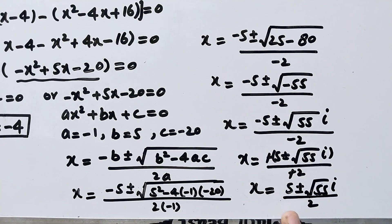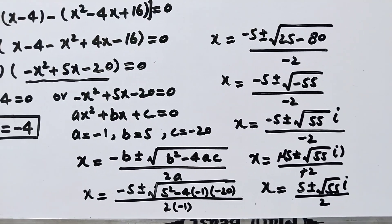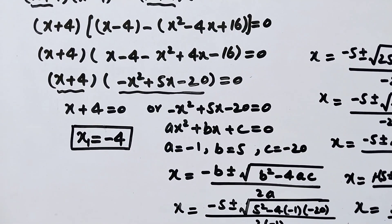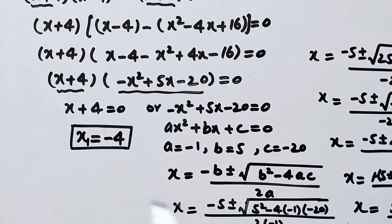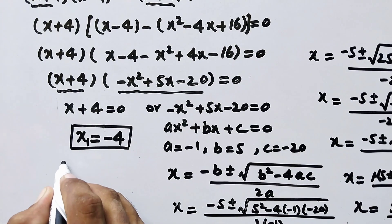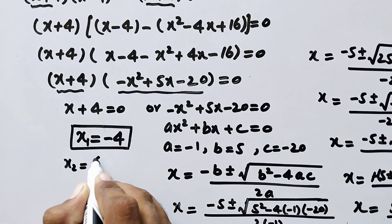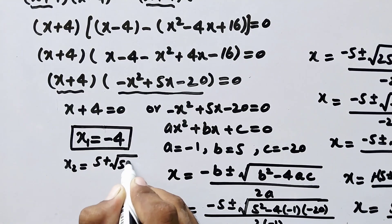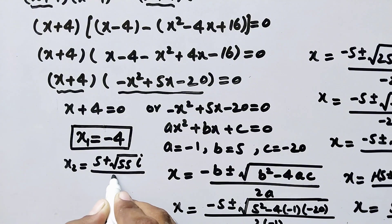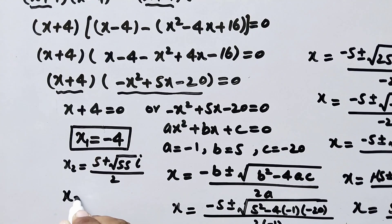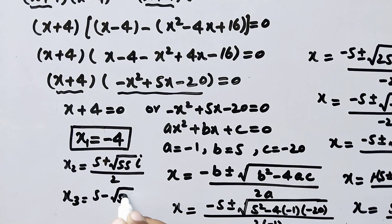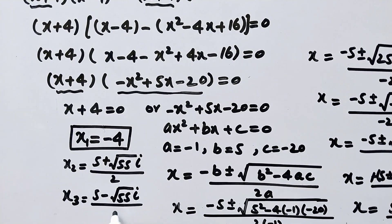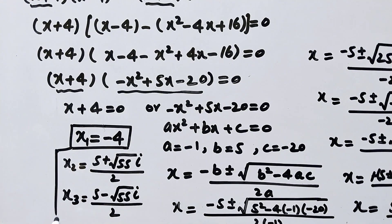From here we are getting two values of x, which means we have gotten a total of three roots: one real root and two complex roots. So x₁ is equal to negative 4, x₂ is equal to 5 plus root of 55 times i divided by 2, and x₃ is equal to 5 minus root of 55 times i over 2. That is our final answer.